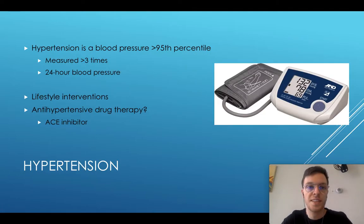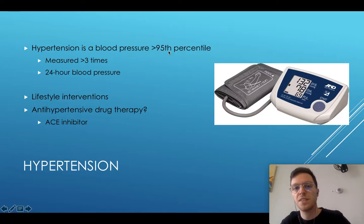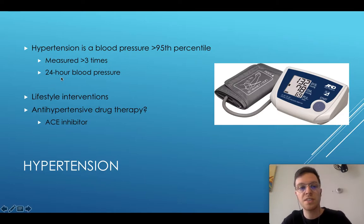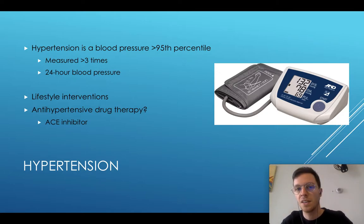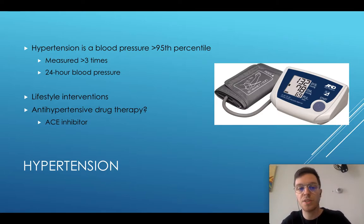Regarding hypertension, we speak of hypertension when the blood pressure is above the 95th percentile three times, or when a 24-hour blood pressure measurement is above the 95th percentile. The 24-hour blood pressure test is more precise so it is recommended. If this is the case, we start lifestyle interventions and could start an antihypertensive drug — an ACE inhibitor would be the drug of first choice.